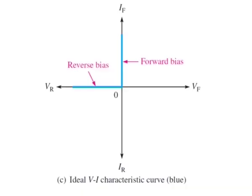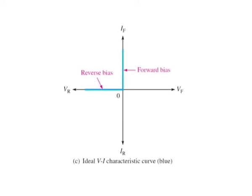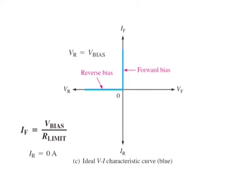Since the barrier potential and the forward dynamic resistance are neglected, the diode is assumed to have zero voltage across it when forward biased, as indicated by the portion of the curve on the positive vertical axis. The forward current is determined by the bias voltage and the limiting resistor using Ohm's law. Since the reverse current is neglected, its value is assumed to be zero, as indicated by the portion of the curve on the negative horizontal axis. The reverse voltage equals the bias voltage.